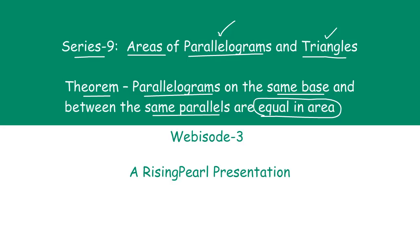So today, friends, we are discussing that if we draw two or more parallelograms in such a way that they have the same base and both parallelograms are between the same parallel lines, then the theorem is telling us they must have equal areas. Let us get started and find out how we can go ahead and prove this theorem.